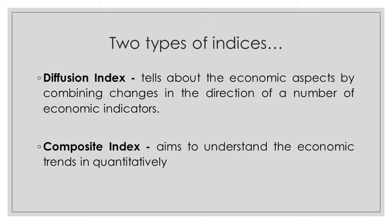Indices help in studying economic conditions comprehensively as they include trends in economic activities. There are two types: the Diffusion Index, which tells about economic aspects by combining changes in the direction of economic indicators, and the Composite Index, which aims to understand economic trends quantitatively.